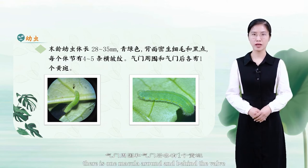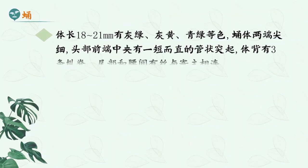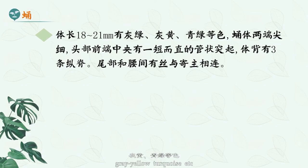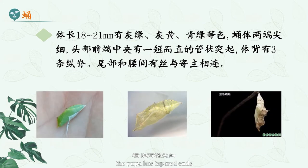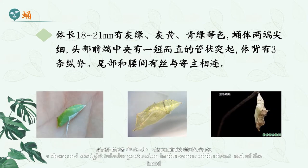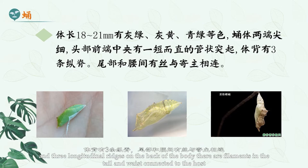There is one macula around and behind the valve. The pupa is gray-green, gray-yellow, turquoise, etc. The pupa has tapered ends, a short and straight tubular protrusion in the center of the front end of the head, and three longitudinal ridges on the back of the body, with filaments in the tail and waist connected to the host.